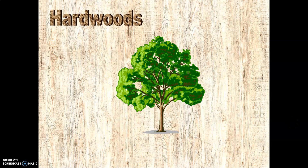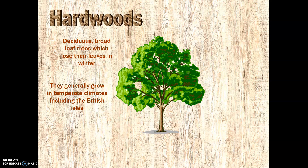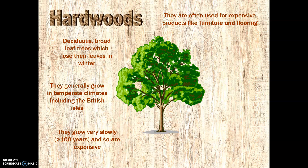So let's go through some hardwoods now. Hardwoods are deciduous trees — the ones we're so used to when we draw a picture of a tree. They are deciduous, broadleaf trees that lose their leaves in winter. They grow in temperate climates like the British Isles. They grow incredibly slowly — often more than 100 years. Some oak trees can be three, four, five, six hundred years old. Because they grow so slowly, they are of course very expensive, and they're used for expensive products like furniture and flooring.